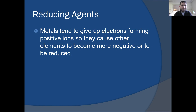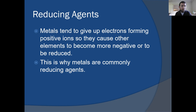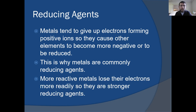For example, in sodium chloride, Na forms a positive one charge, essentially helping to reduce the chlorine. Chlorine goes from zero to minus one when it forms chloride. So our metals tend to be really good reducing agents. This is why metals are commonly reducing agents. The more reactive the metal — meaning how easily it loses those electrons — the more readily and the stronger it is as a reducing agent.